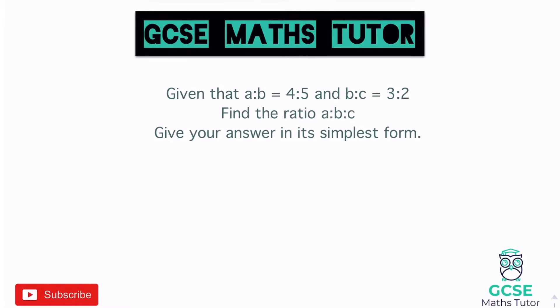It says: given that A to B is in the ratio 4 to 5 and B to C is in the ratio 3 to 2, find the ratio A to B to C — and there's our three-part ratio. But we're starting off with two two-part ratios. This can only happen when we've got what I call a crossover within those ratios.